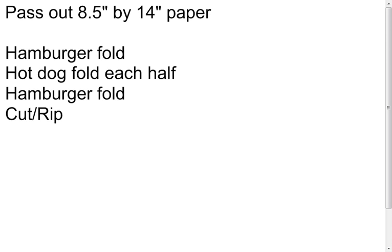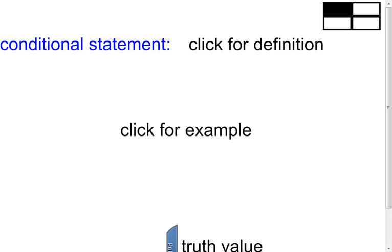We're going to talk about conditional statements in this lesson. This slide is for notes on how to fold your paper from class. If you didn't do the foldable, take a piece of paper and hamburger fold it, hot dog fold each half, then hamburger fold again, and cut and rip to create a little booklet with four windows that will open. On the very front cover, top left, on the outside, write 'conditional statement.'